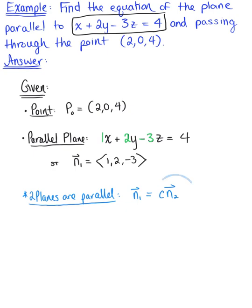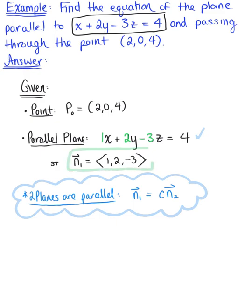In order to find the equation of this new plane parallel to the given plane, we simply need to select any scalar multiple of n sub 1 that we want. The easiest choice is to let the scalar c be 1, so we'll use this same normal vector to find the equation of the new plane.